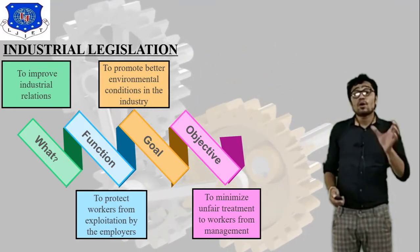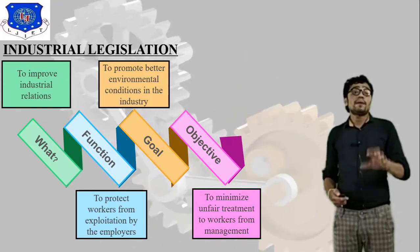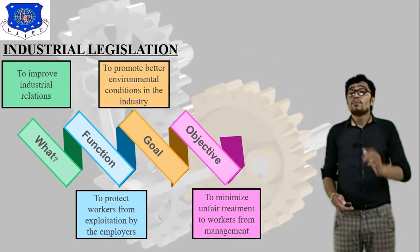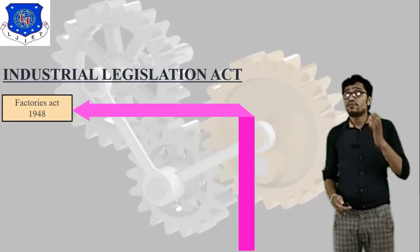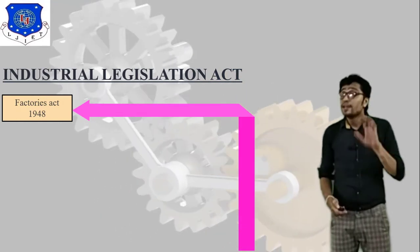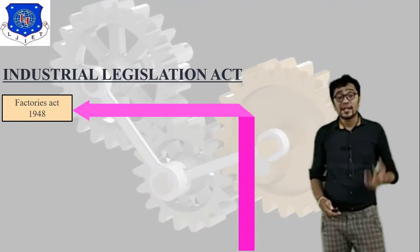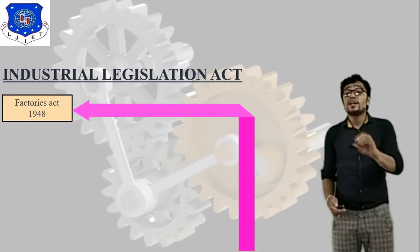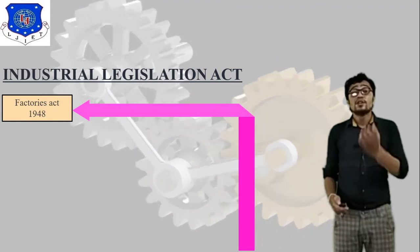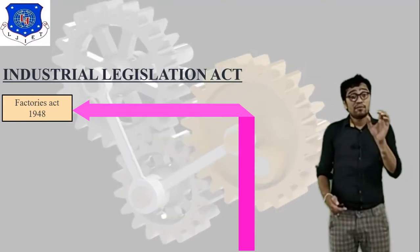So these are the basics of Industrial Legislation — it is nothing but Industrial Acts followed by each and every factory. Moving forward, there are mainly four different types of Industrial Legislation Acts. First is the Factory Act 1948, which is generally related to worker safety and ergonomics.